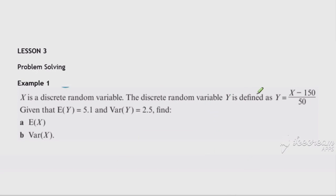In this first example we've got a function of x, so y is a function of x, and we've been told the expected value and the variance of that function of x — so the expected value and variance of y. We need to work backwards from that to find the expected value of x and the variance of x.